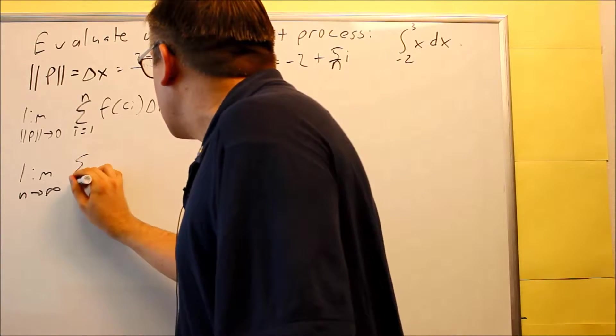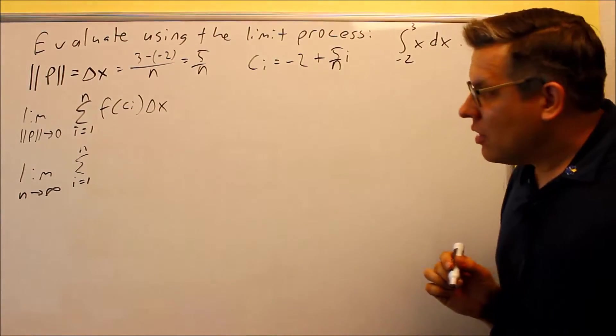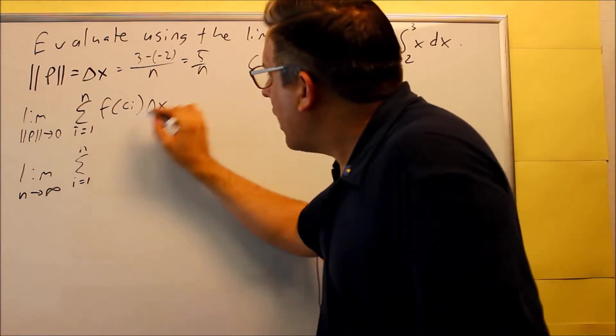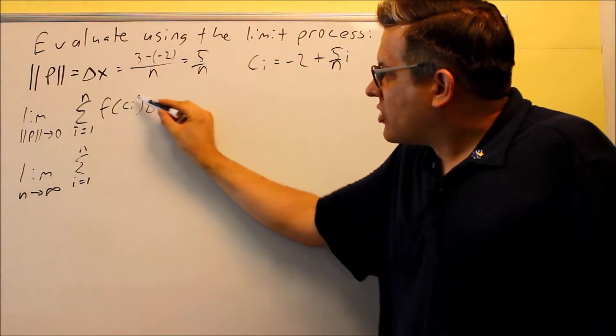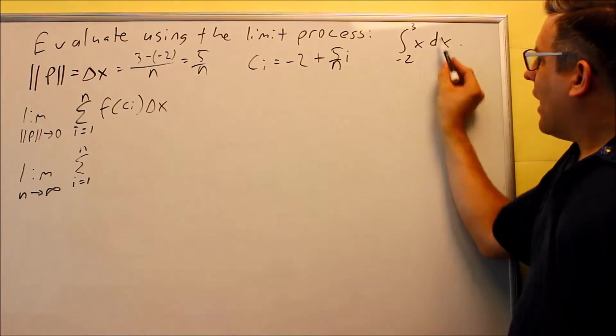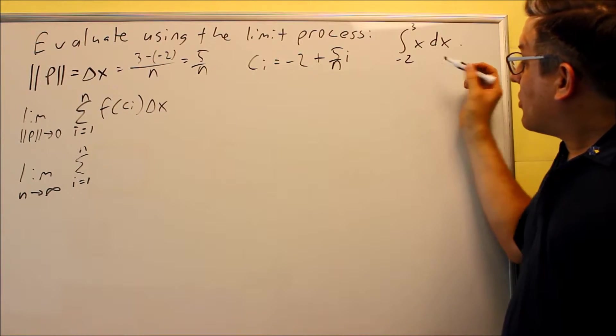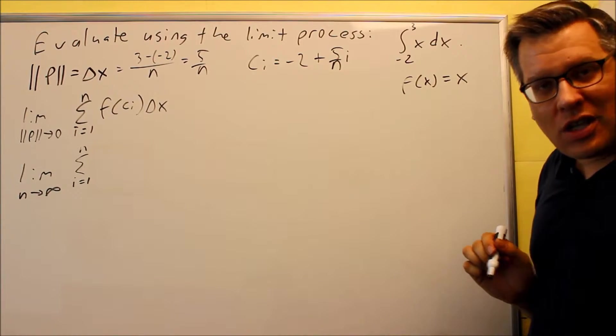Now that we have that complete, what we're ready to do is put in information for f of ci and delta x. We already know c of i is this, so we've got to find out what f of ci actually is. Now, what that will involve is I've got to put ci into the f. The f is this one right here, right in front of the dx.